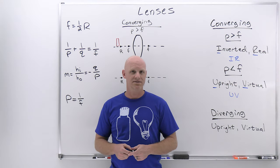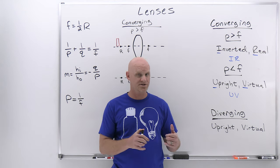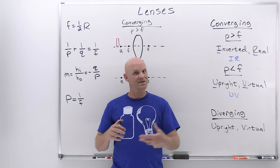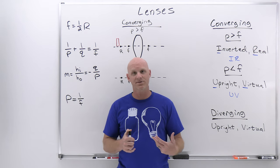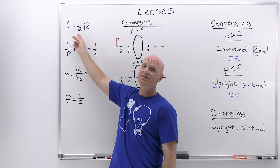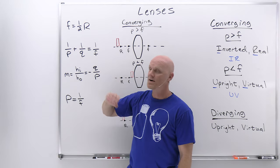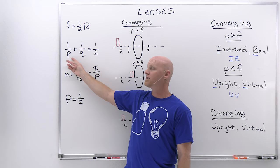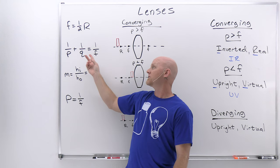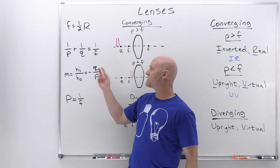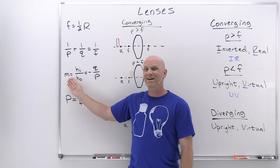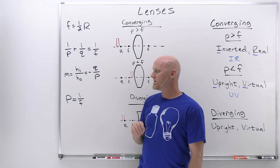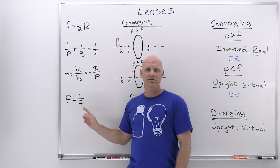If you haven't watched the last lesson on mirrors, I highly recommend you watch that one first, because I'm going to be alluding back to it continuously. We're not going to lay all the groundwork again because most of it is exactly the same. We'll define the focal distance — just like with mirrors, it's half the radius of curvature. The thin lens equation is 1/P + 1/Q = 1/F, where P is the object distance, Q is the image distance, and F is the focal distance. Magnification equals the height of the image over the height of the object, or negative Q over P.